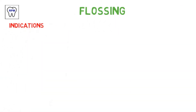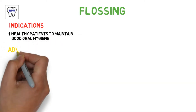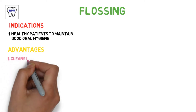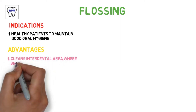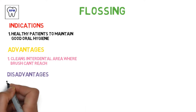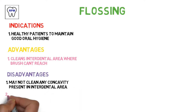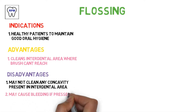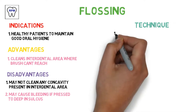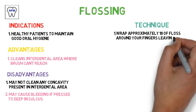Starting off with flossing. Its indications: for healthy patients who want to maintain good oral hygiene. Advantages: it cleans the interdental area where the toothbrush cannot reach. Disadvantages: it may not clean any concavity present in the interdental area, and it may cause bleeding if pressed too deep in the sulcus.